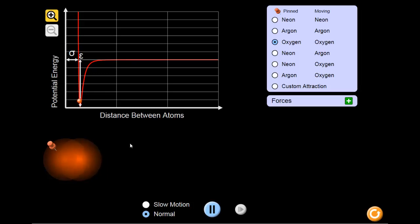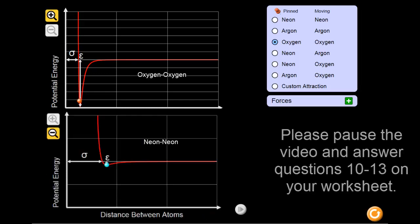Take a moment to pause the video and make note of some other differences that can be seen on the graph of two oxygen atoms when compared to two neon atoms. Why might these differences make sense?